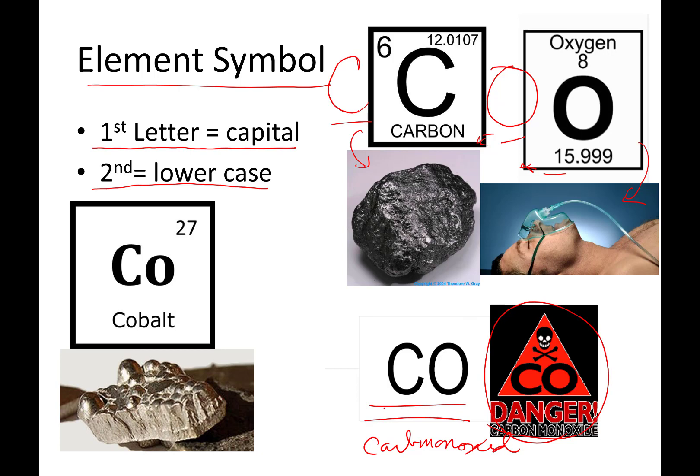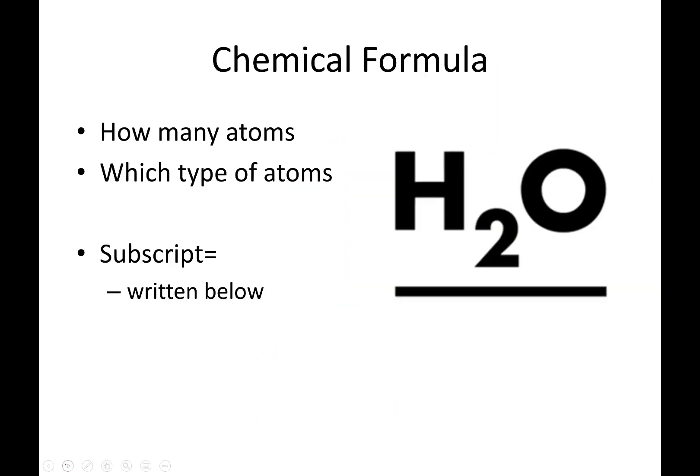On the other hand, if instead of having a capital C and a capital O, you have a capital C and a lowercase o, that is something completely different. That is the solid element cobalt. And cobalt is a silver, shiny metal in its pure form. So how you write these, if you write them capital or lowercase, you are talking about totally different compounds, totally different properties, and totally different uses. So this capital lowercase thing is a huge big deal.